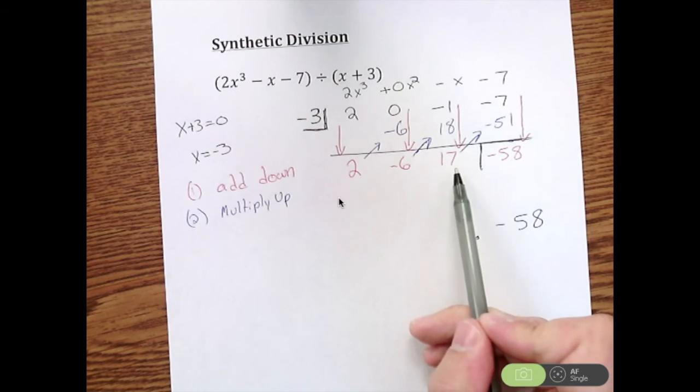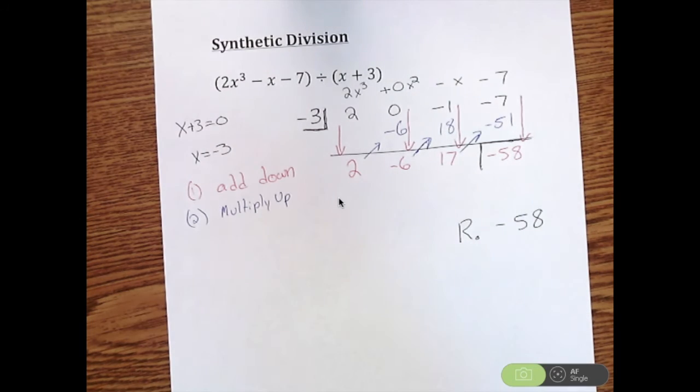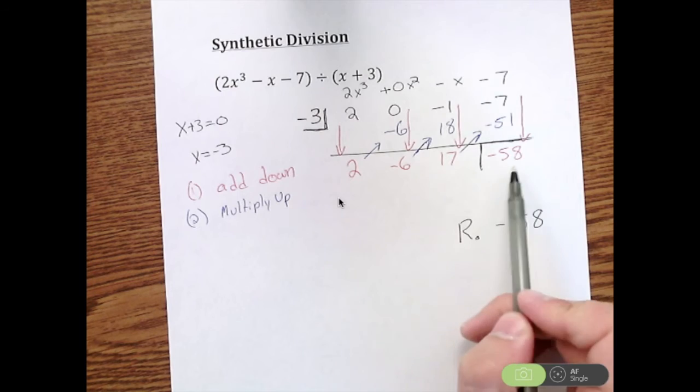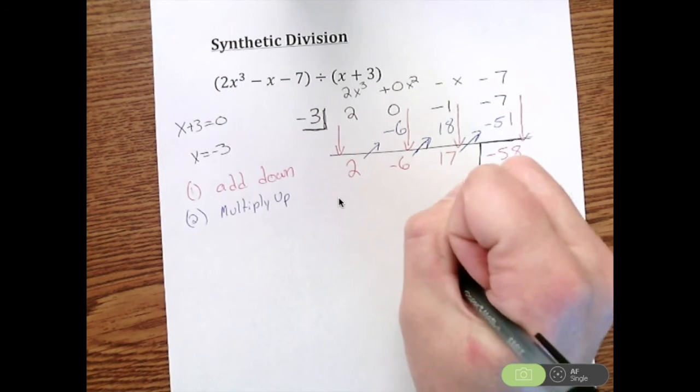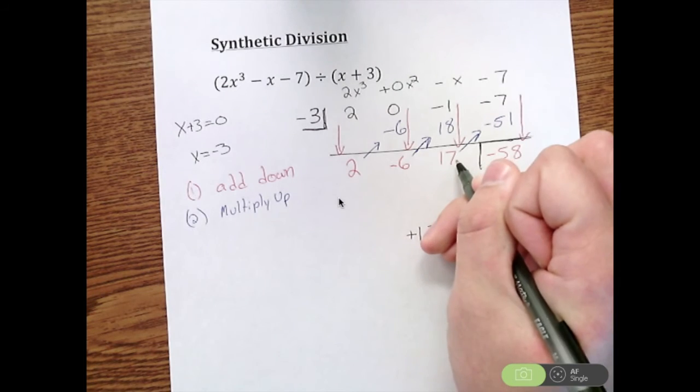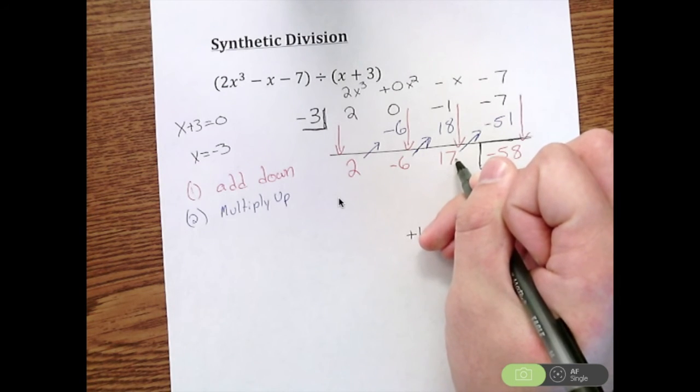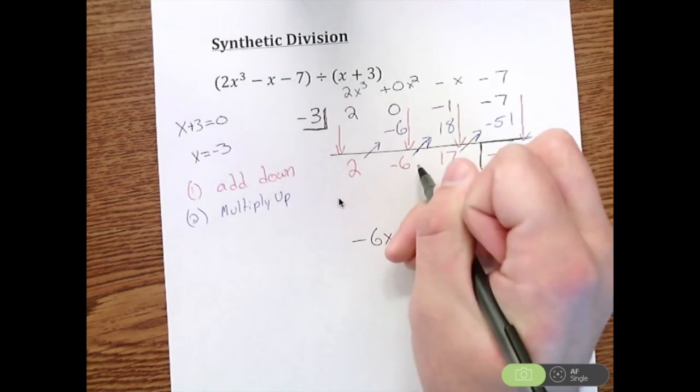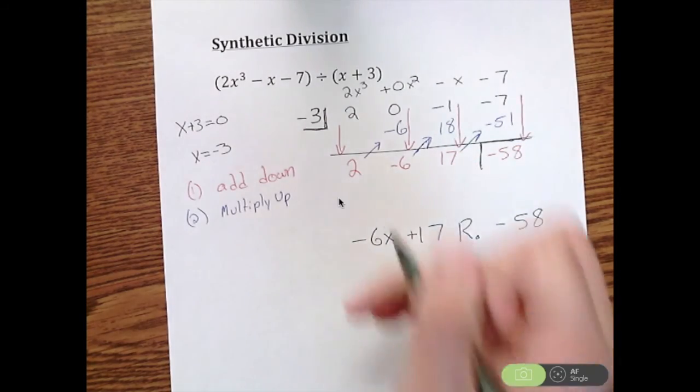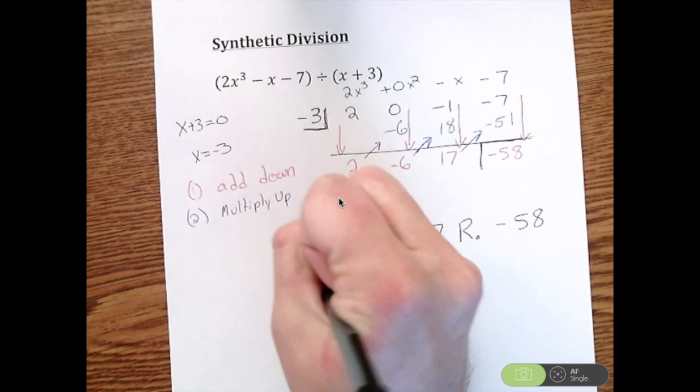And then after that we know these are all going to be coefficients of our answer. So you kind of work your way back up. So 17, that's going to be your constant. After your constant you get your first x value, so we're going to get negative 6x, which makes that 2x squared.